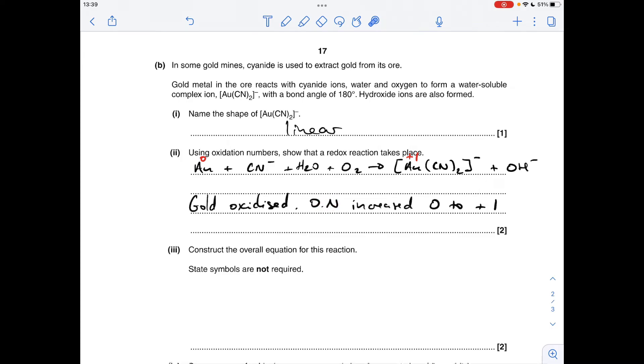Obviously in the exam you would need to write oxidation number, you don't just put Au+1. We'll deal with the reduction process now. If we look at the oxygen in O₂, it's got zero oxidation state, each of those oxygens is zero, whereas in the OH⁻ ion it's -2.